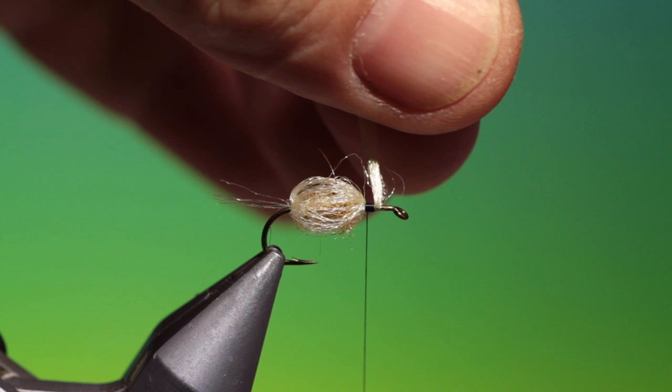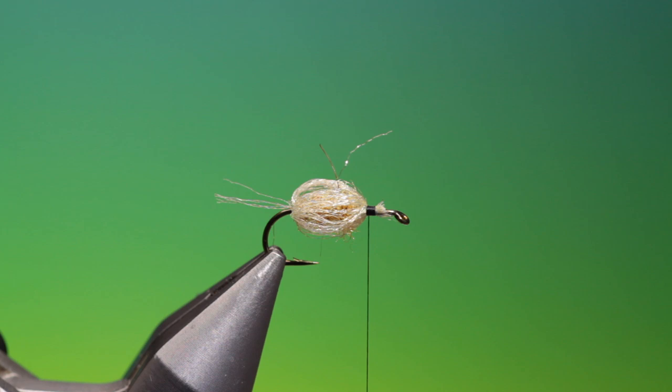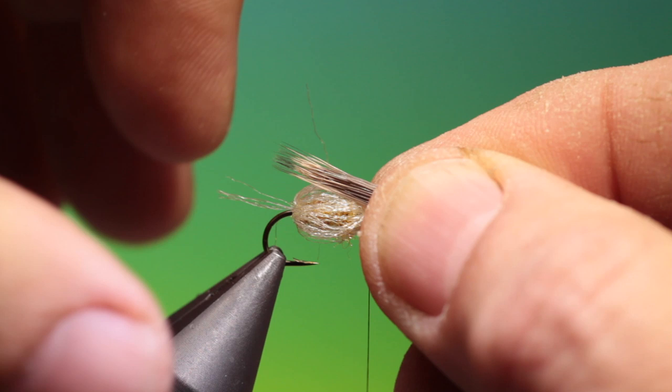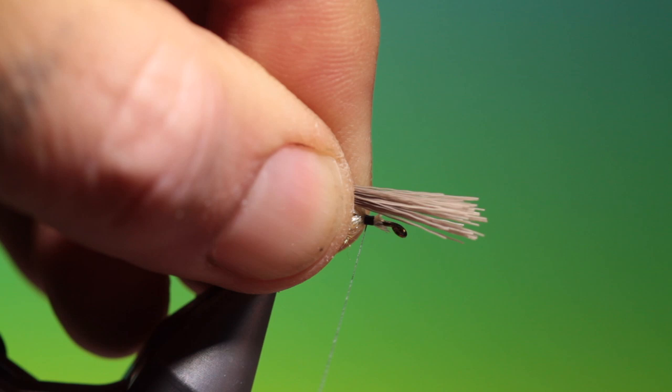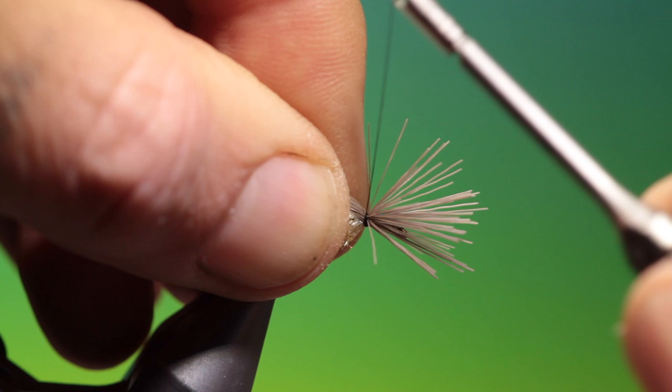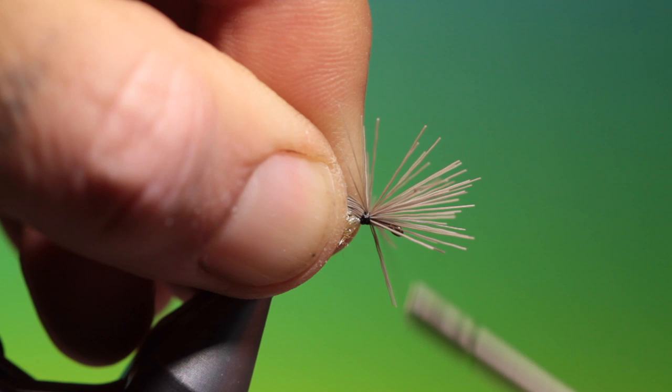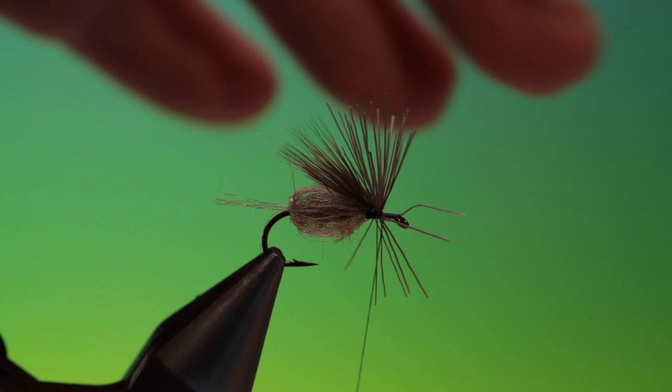We remove that. Now a tiny bunch of deer hair - I like to use quite short, stiff hair with nice markings for this. Then we go once, twice around loosely, and then we tighten up. Then we go through the spun ends just to secure it. We can pull everything back, go forward, and then remove all these ends.